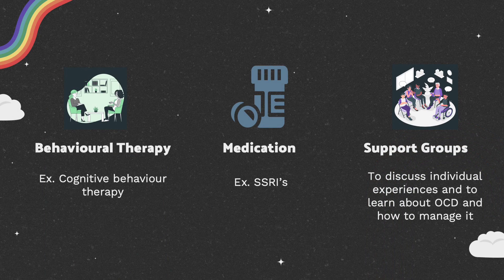There are a variety of intervention options available. These can include behavioral therapy, most commonly cognitive behavioral therapy, medications, most commonly SSRIs, and support groups to discuss individual experiences with OCD and learn more about the disorder as well as how to manage it.